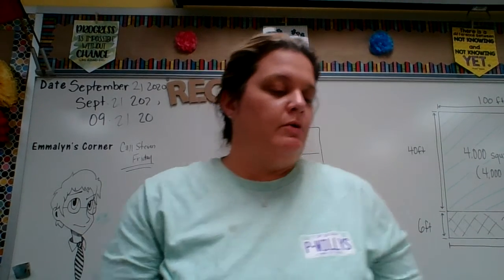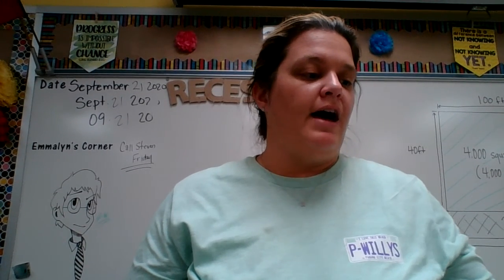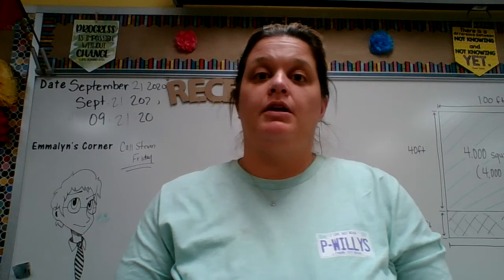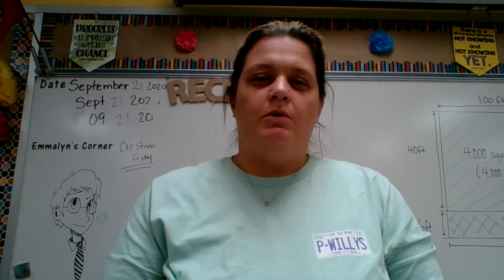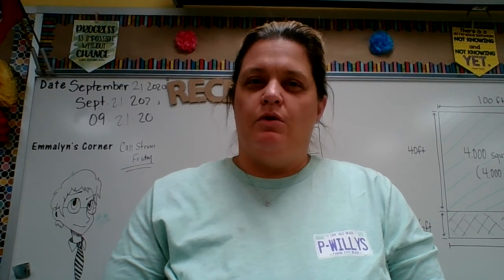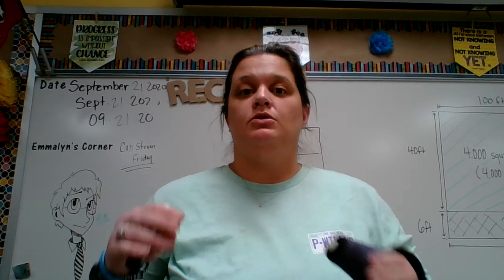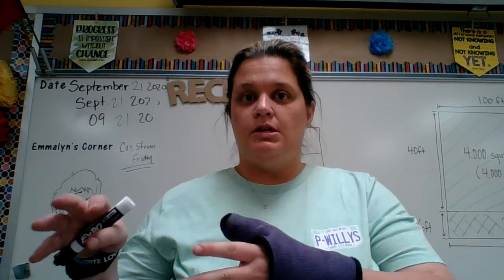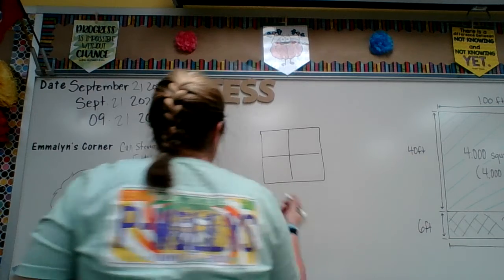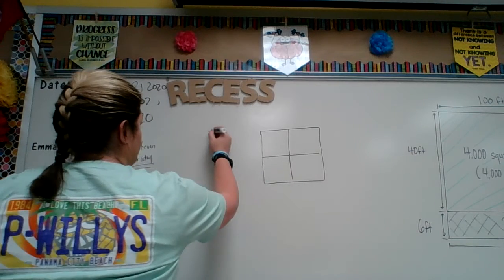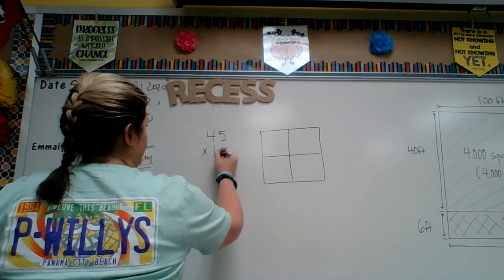So what we're going to be doing this week, we're going to start a new lesson — Lesson 5 — and that's multiplying whole numbers. But before we do that, I want to talk about what you did last year in fourth grade. In fourth grade, you multiplied up to two digits by two digits. So a problem would have been like 45 times 17.